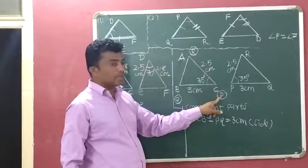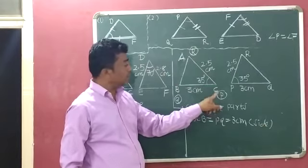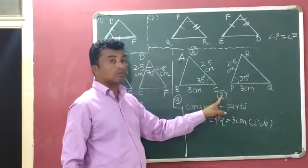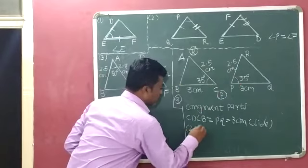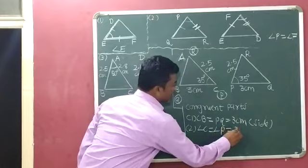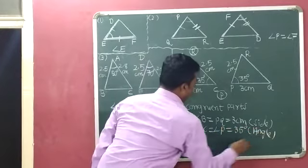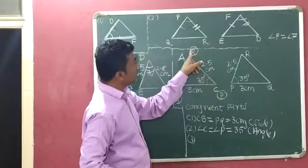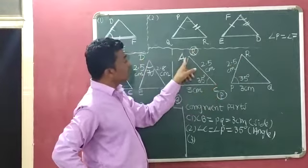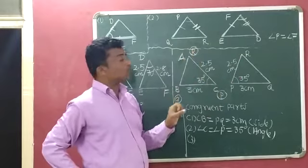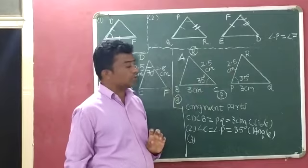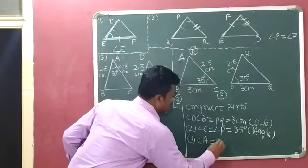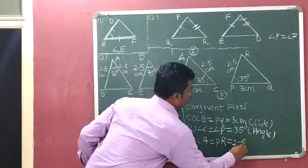Angle C corresponds to angle P, and they have the same measurement of 35°. So angle C = angle P = 35°. Third, CA corresponds to PR — CA = 2.5 cm and PR = 2.5 cm — so CA = PR = 2.5 cm.